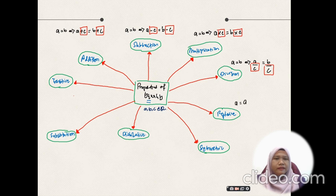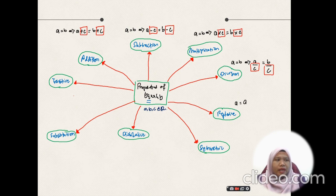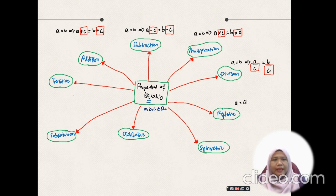The next property is reflexive. Imagine it like a reflection — like looking at yourself in a mirror and seeing your image. Reflexive means a thing is equal to itself: a equals a, b equals b.